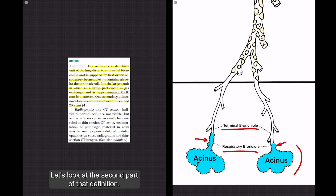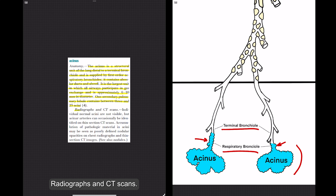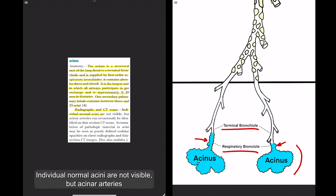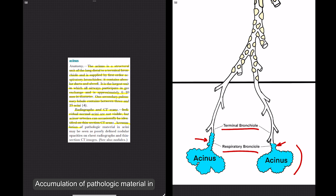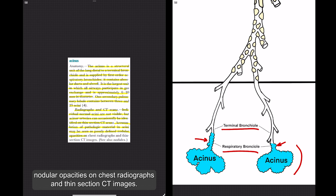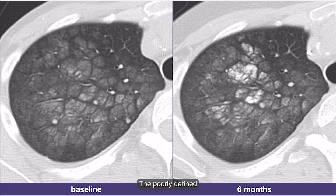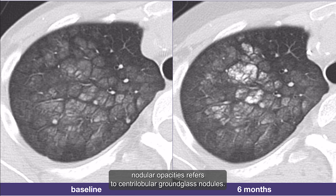Looking at the second part of that definition — radiographs and CT scans: individual normal acini are not visible, but acinar arteries can occasionally be identified on thin-section CT scans. Accumulation of pathologic material in acini may be seen as poorly defined nodular opacities on chest radiographs and thin-section CT images. These poorly defined nodular opacities refer to centrilobular ground-glass nodules.